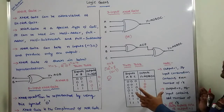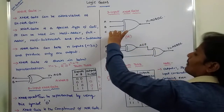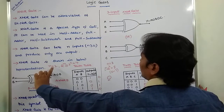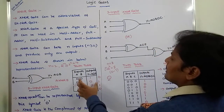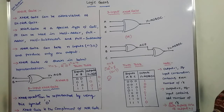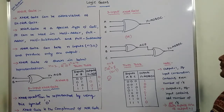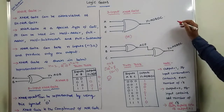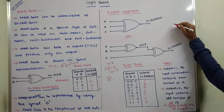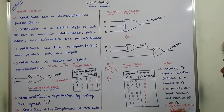This is the 3-input exclusive NOR gate with its logic diagram, and this is the 2-input exclusive NOR gate with its truth table. This has been an introduction to the exclusive NOR gate. Thank you for watching this video. If you like this video, please share it with your friends and classmates and subscribe to my channel.